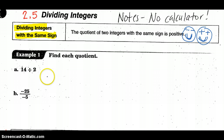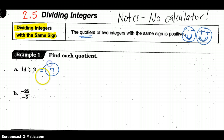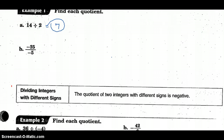Let me show you how that looks. The quotient — that word just means the result of division — so find each quotient, in other words divide. 14 divided by 2: they're both positive, so 14 divided by 2 gives me a positive 7.